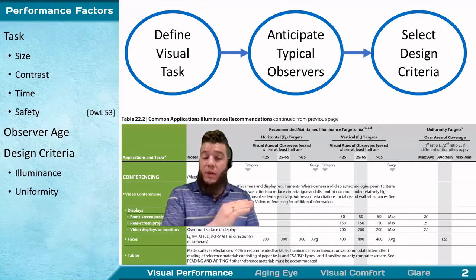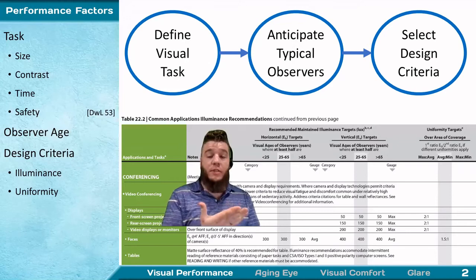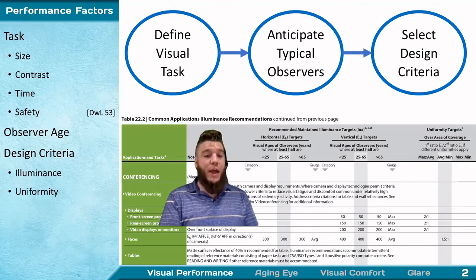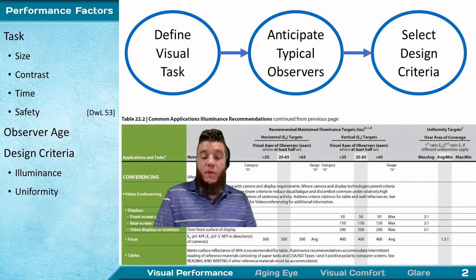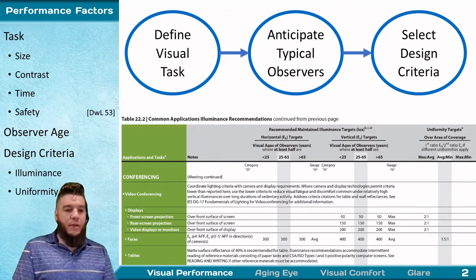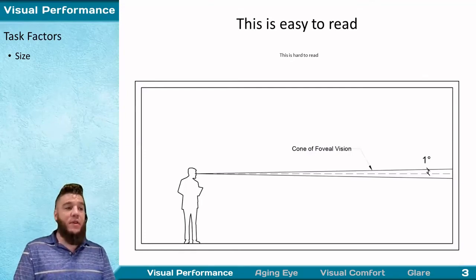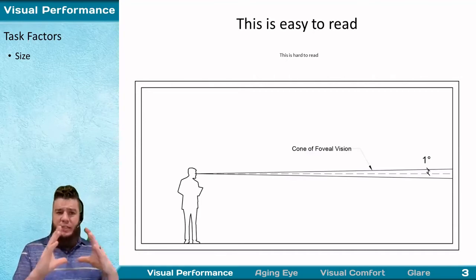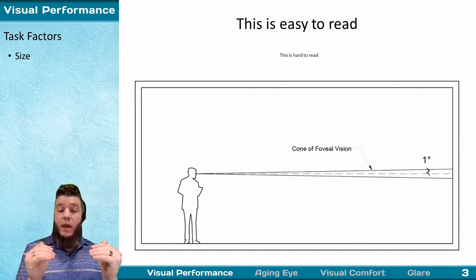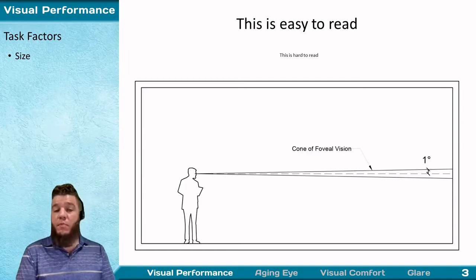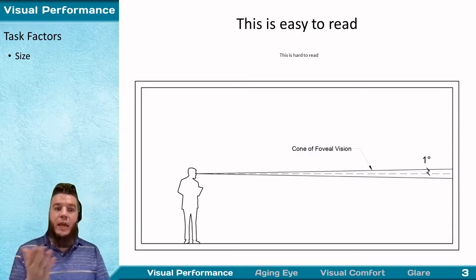The specific numerical values are derived from performance factors we know to be relevant to lighting — specifically our task factors. Our first task factor is simply size. It's important to point out that this is not size as an area of a task, because distance matters too. So this is actually angular size.